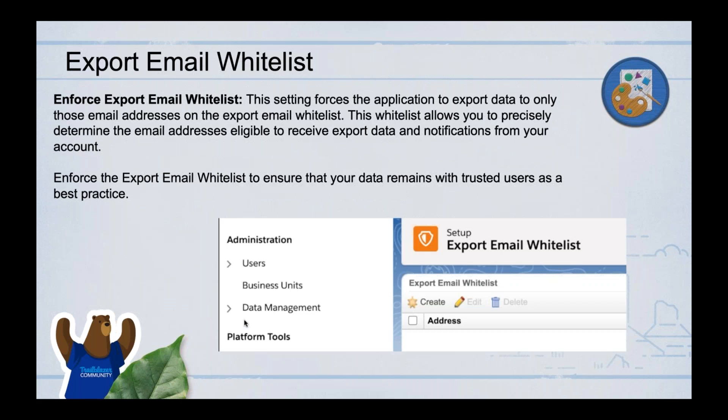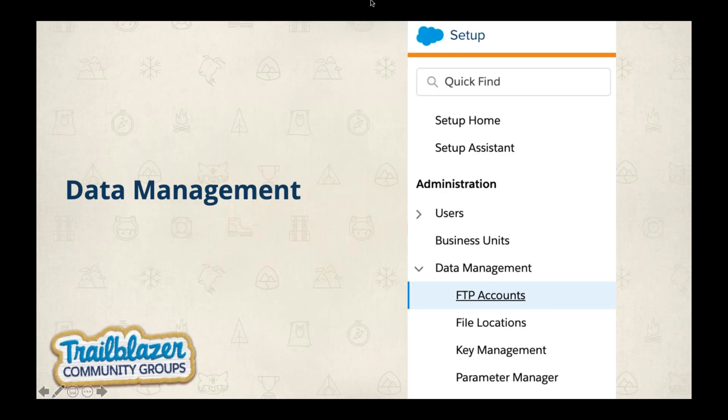Export Email Whitelist restricts which email addresses can export data or reports from your Marketing Cloud account. This prevents all users from downloading data — only whitelisted email addresses can export. This is a useful security feature for controlling who can download data from your instance.